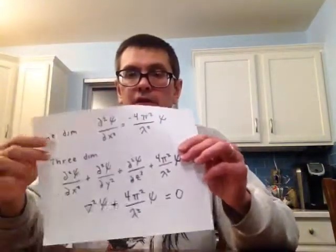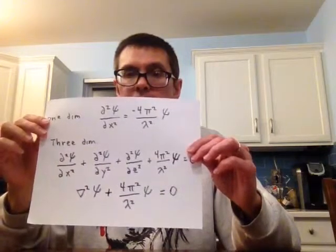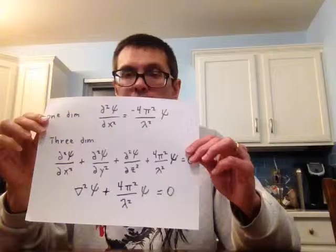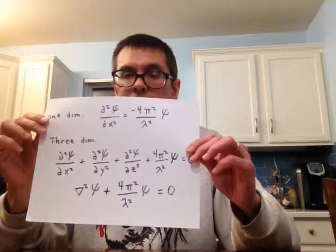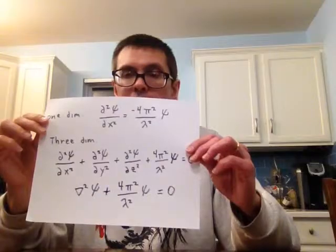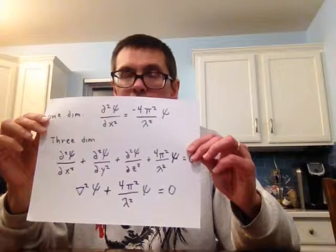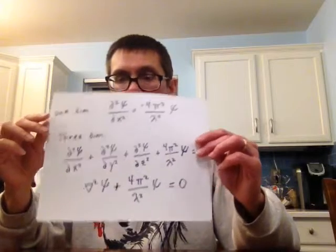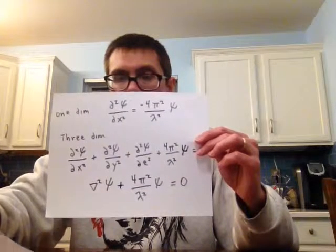So let's go from one dimension to three dimensions. Then we get into the Del operator. Instead of doing the three partial derivatives, for shorthand we just write del squared, where del squared is d²/dx² + d²/dy² + d²/dz². So that gives us an abbreviated three-dimensional form of the Schrodinger wave equation when it's time invariant, like inside an atom.